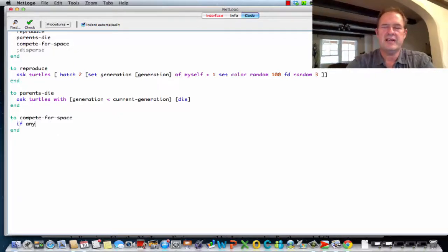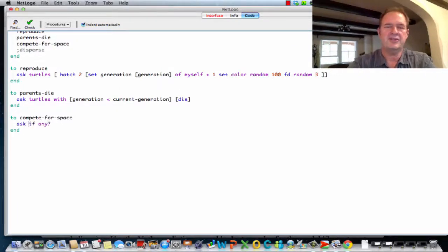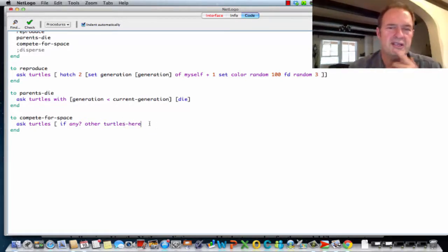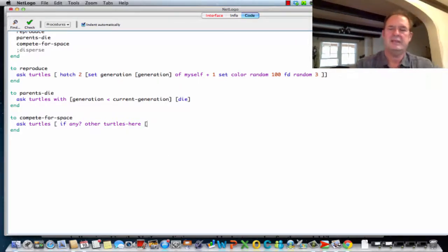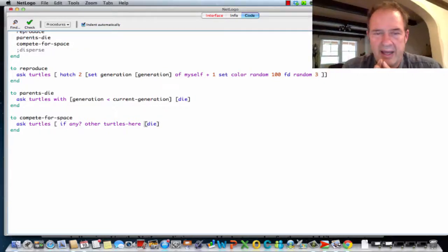We're going to say if there's any... We're going to have to ask the turtles to do this, right? Ask turtles if there's any other turtles here. These are our special words that you'll become more familiar with as you do this. But if there's any other turtles here, die. Turtles here means if you happen to be on a space that contains another turtle, you should just die.